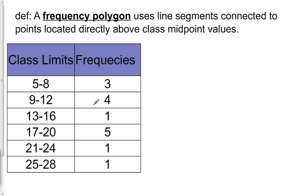Today we're going to create a frequency polygon and an ogive. We'll start with the frequency polygon. A frequency polygon uses line segments to connect points located directly above class midpoint values for each class. To find the class midpoints for each class, we're going to look at class midpoints.